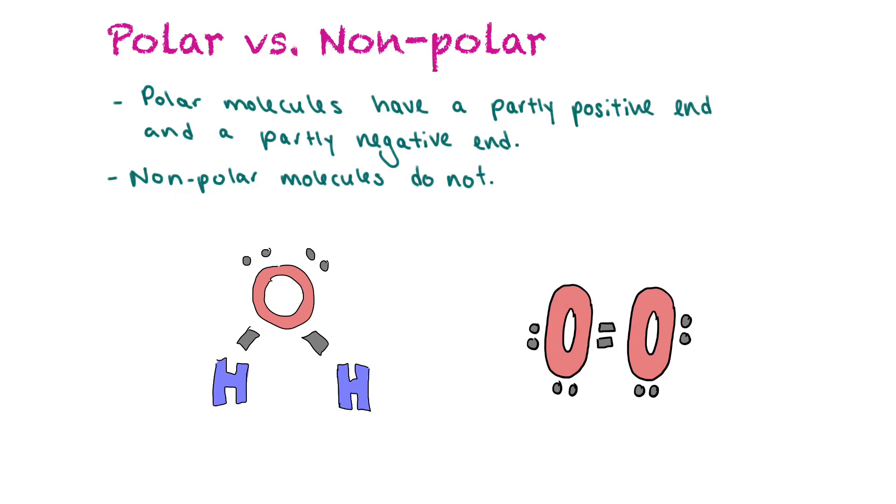Polar molecules have a partially positive end and a partially negative end. And those partially positive and negative ends are called dipoles. So if you look at this molecule of water, it has oxygen, which has lone electrons. So that's considered the partly negative end. So those negative ends are called dipoles.